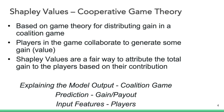In the context of explaining machine learning models, explaining the model output is the coalition game. The prediction is the gain or the payout. And the input features are the players that cooperate with each other to help the model arrive at a prediction.